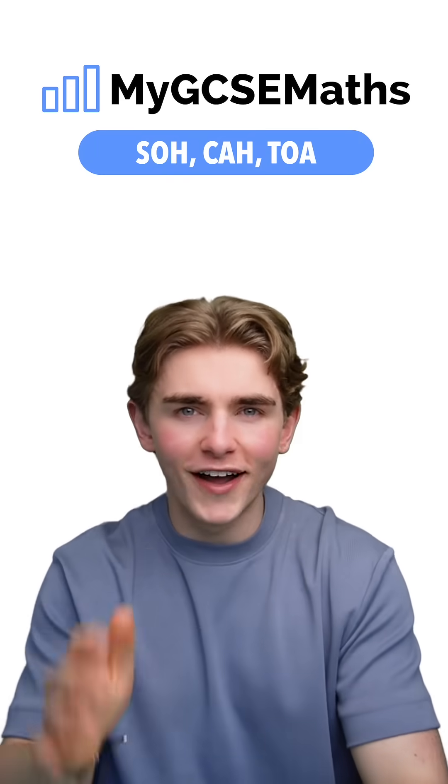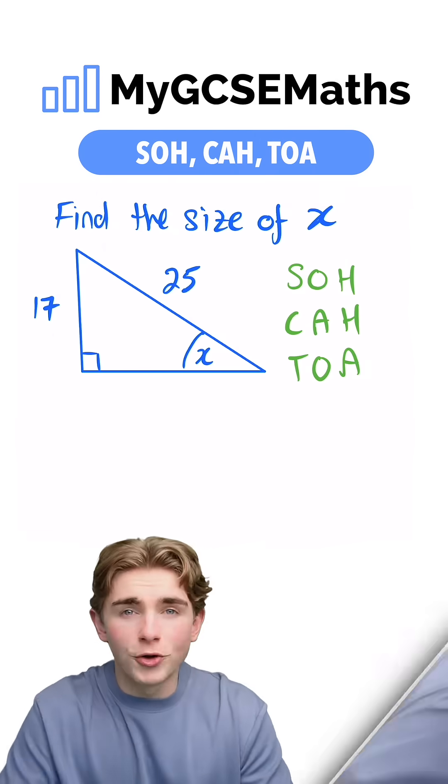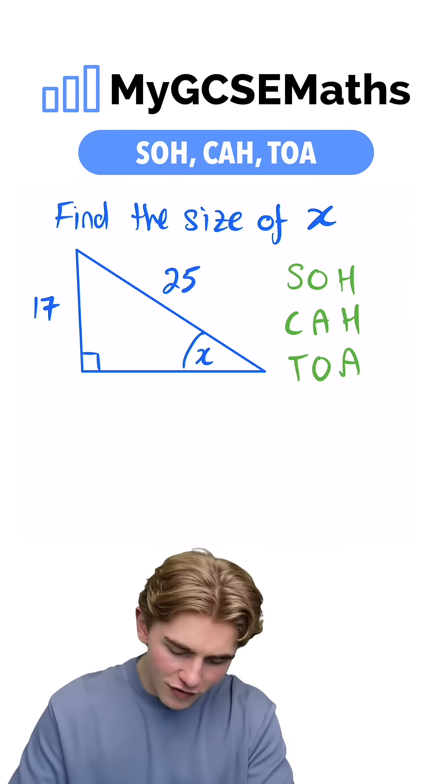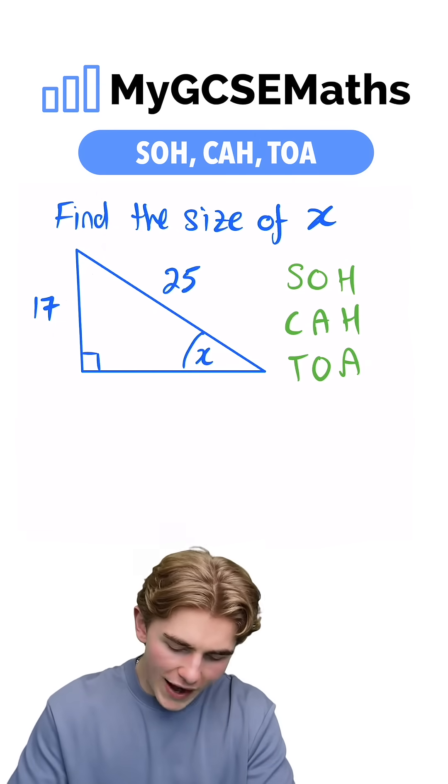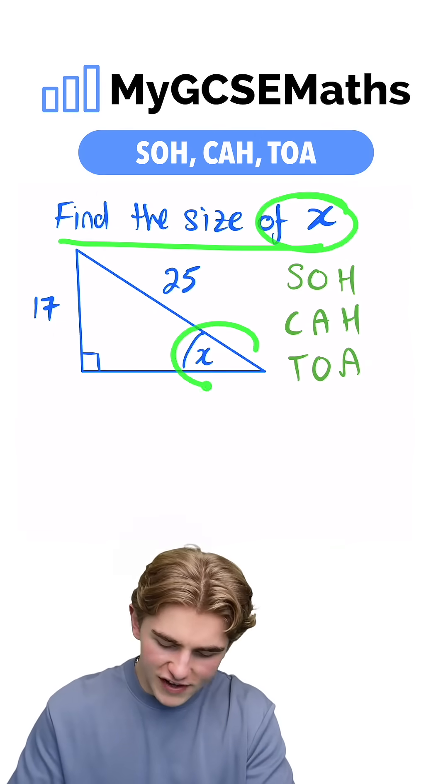GCSE Maths SOH CAH TOA in 52 seconds. Let's go. Okay, let's have a look at this. We're given this right angle triangle and we're asked to find the size of x, which is the angle down here.